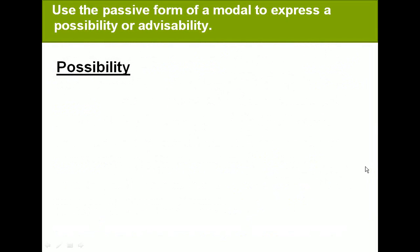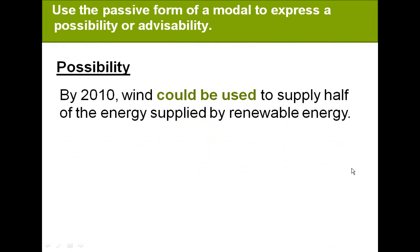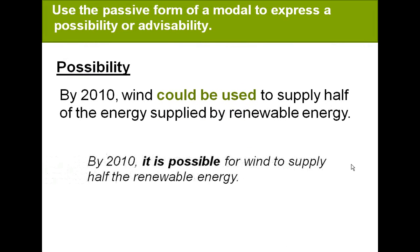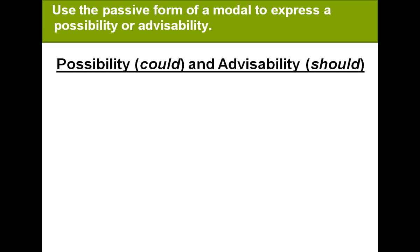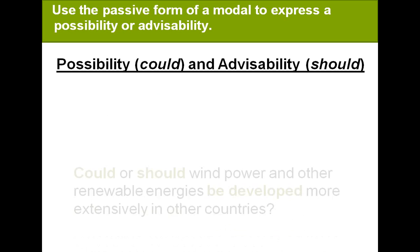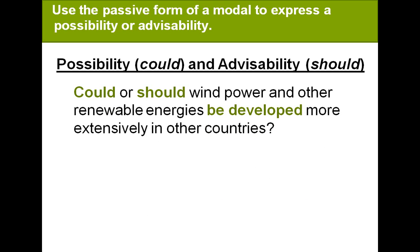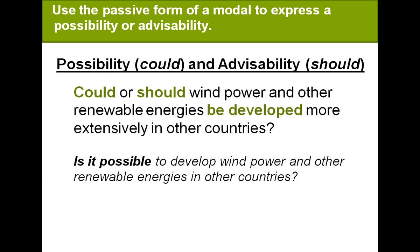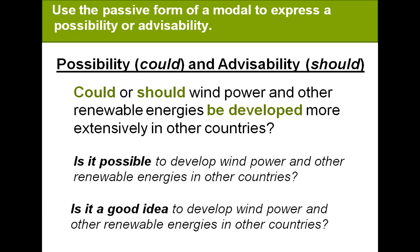Use the passive form of a modal to express possibility or advisability. Possibility: By 2010, wind could be used to supply half of the energy supplied by renewable energy — meaning it is possible for wind to supply half of the renewable energy. 'Could' expresses possibility and 'should' expresses advisability — is it a good idea to develop wind power? Is it a good thing to do?